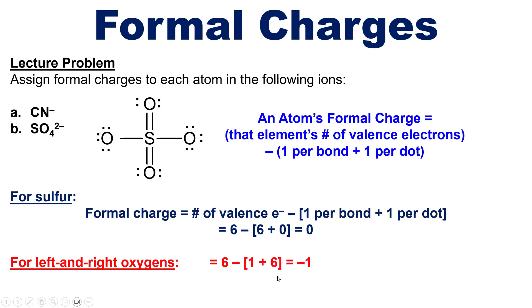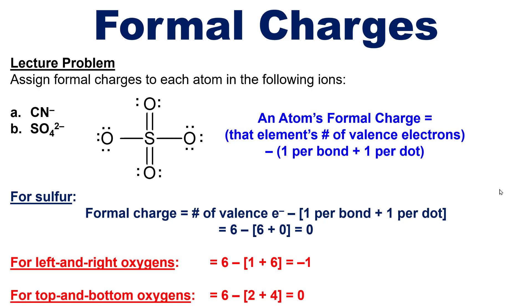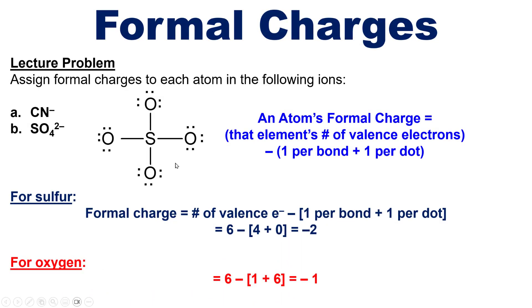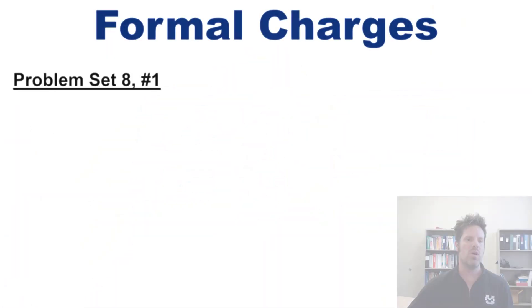For the left and right oxygens that have a single bond, we take six valence electrons and subtract one for the bond and six for the dots, giving a formal charge of negative one. For the top and bottom oxygens, there are two bonds and four dots, so the formal charge is six minus two plus four, which equals zero. Comparing the two Lewis structures, the one with the largest number of zero formal charges across its atoms is the more stable one. This second structure, with zero formal charge on sulfur and two out of four oxygens, is more stable than the first in which all atoms have non-zero formal charges.